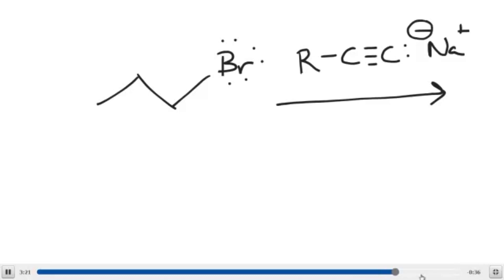So I'm going to draw a primary substrate with a decent leaving group, my favorite one, bromide. So it would now come into the solution once you have this deprotonated terminal alkyne. And the solvent for that would be ammonia. We just saw that on the last slide. And because this is a primary substrate, you can do an SN2 substitution.